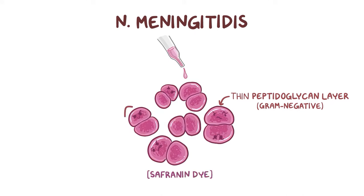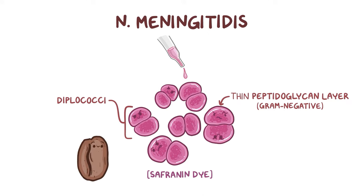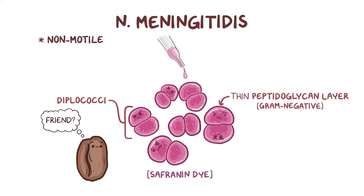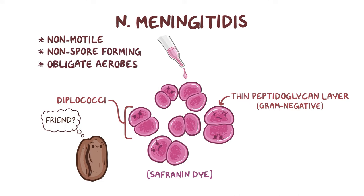N-meningitidis typically live in pairs, called diplococci, stacked side to side, so the pair looks kind of like a coffee bean. They're also non-motile, non-spore-forming, and obligate aerobes, which means they absolutely need oxygen to grow.